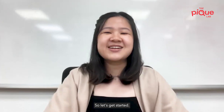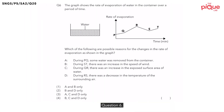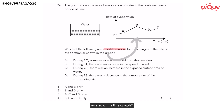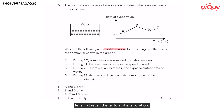So let's get started. Question six: the graph shows the rate of evaporation of water in the container over a period of time. Which of the following are possible reasons for the changes in the rate of evaporation as shown in this graph? Before we explore the possible reasons, let's first recall the factors of evaporation.